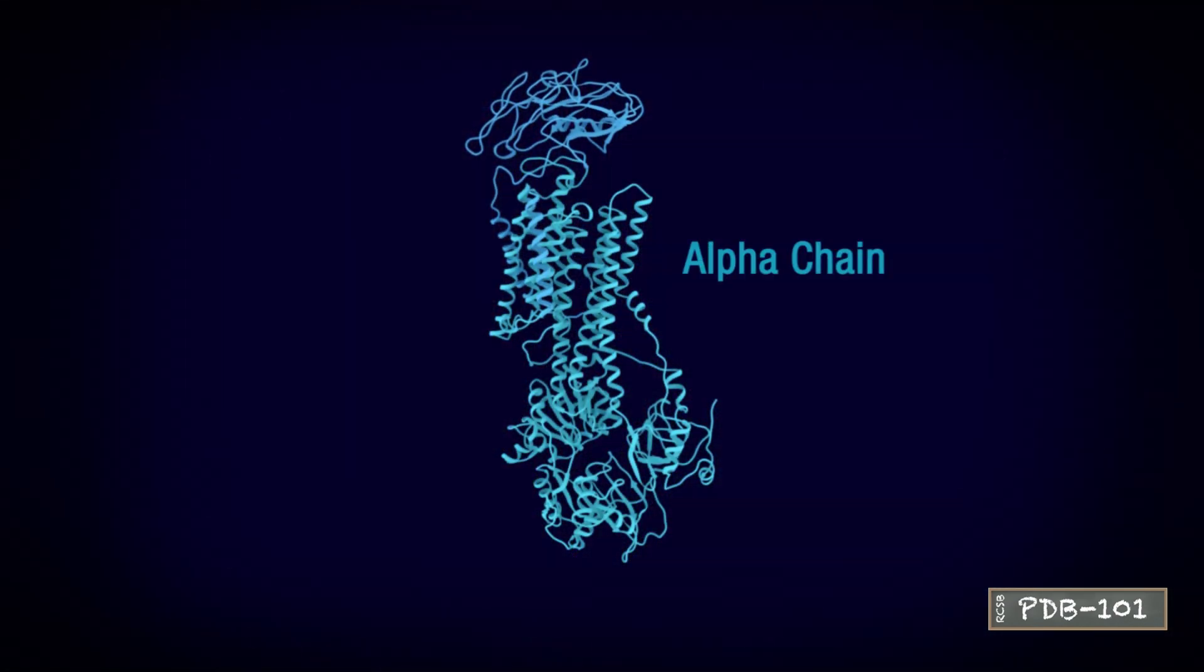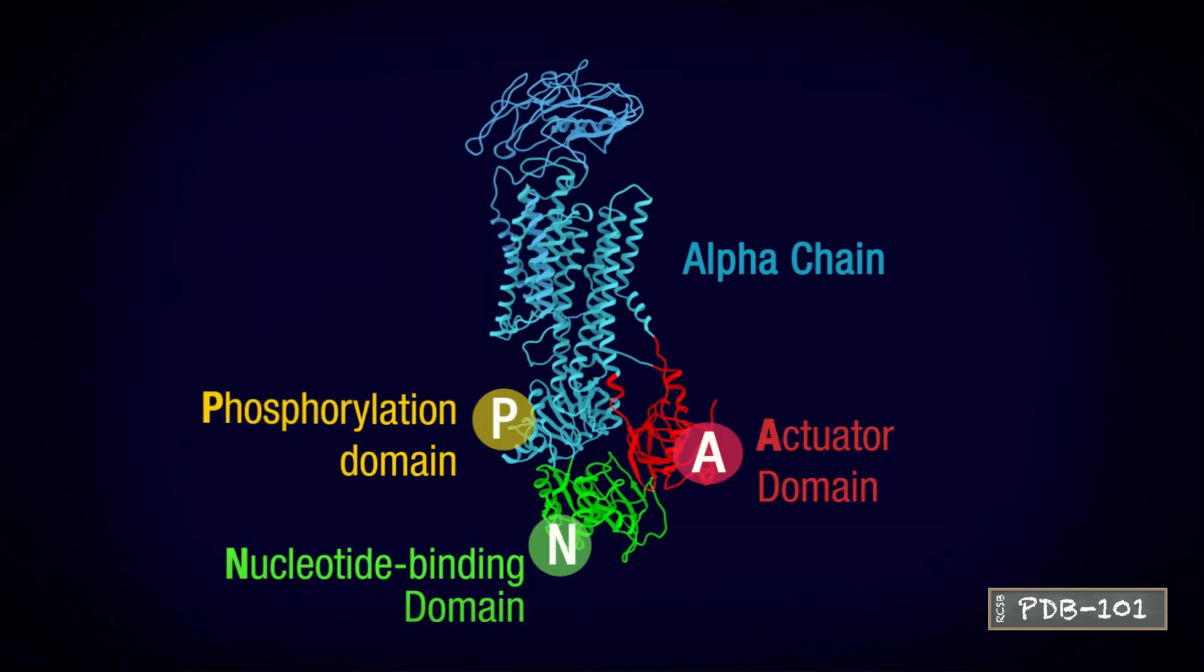This molecular machine comprises three chains: alpha, beta, and gamma. Within the alpha chain, three domains—A, P, and N—form the core engine of the pump.